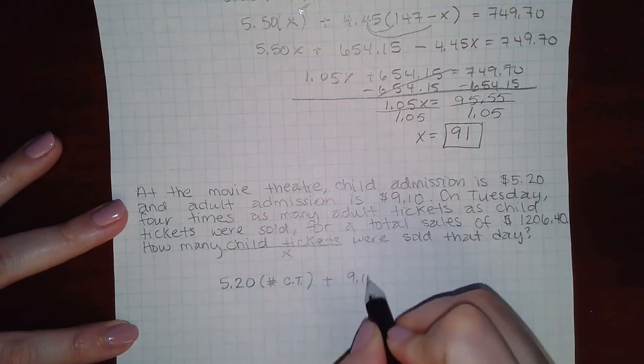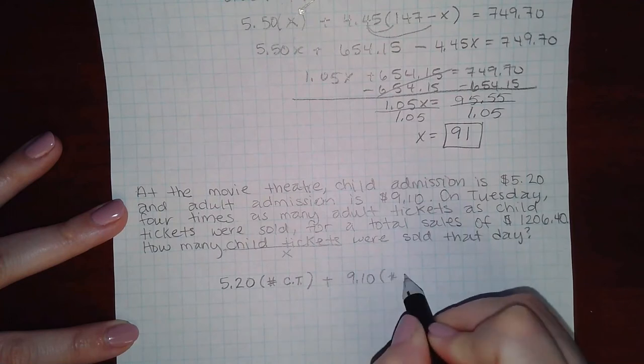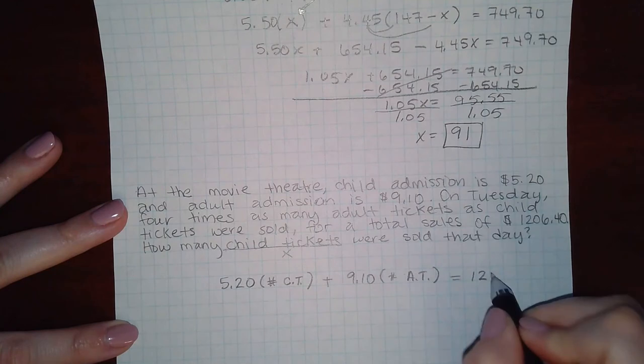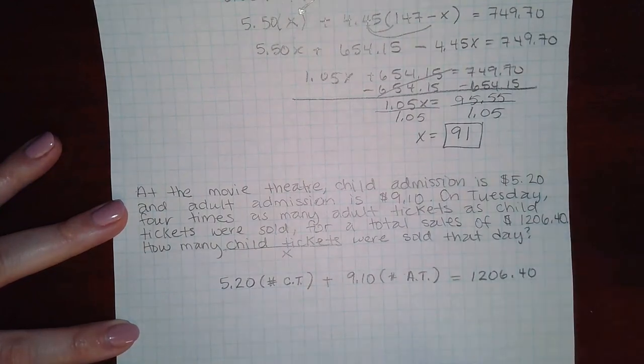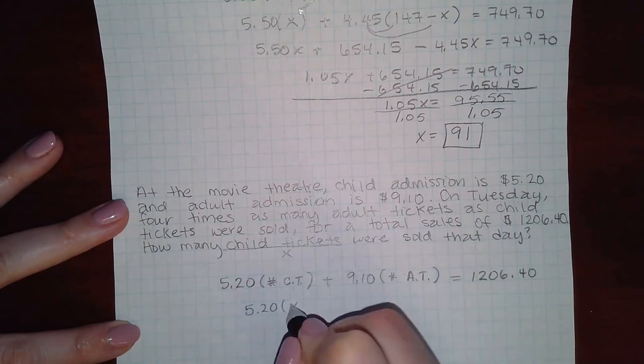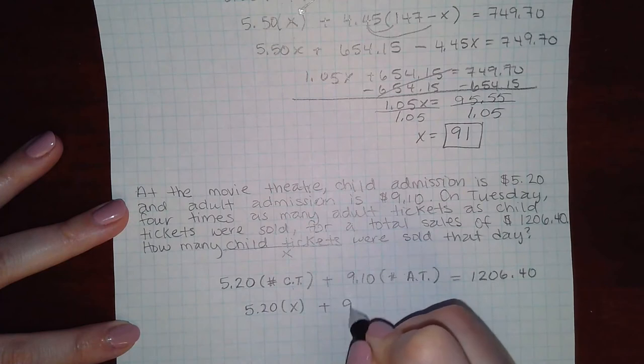Plus $9.10 times the number of adult tickets. And that should give me the total that they paid for the day. So this is who you want to let be the X, since that's what we're trying to find.